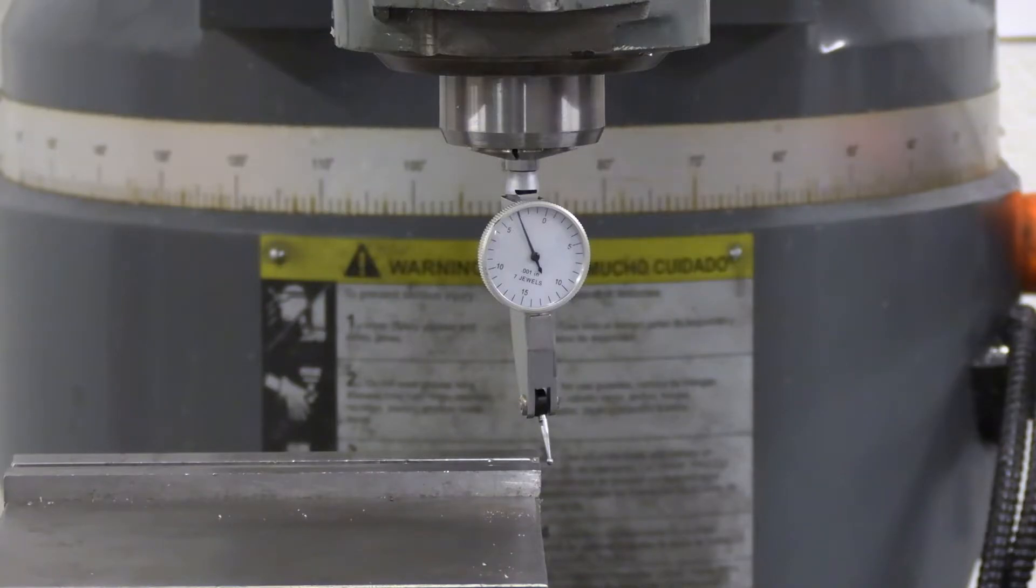So we have come to mill number four and we're going to check the alignment on this one. Same process. We're going to move it over in the X. We've already adjusted our Z. And then I'll bring this forward in the Y.